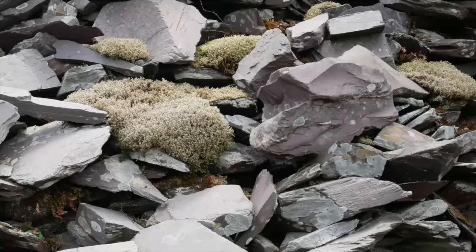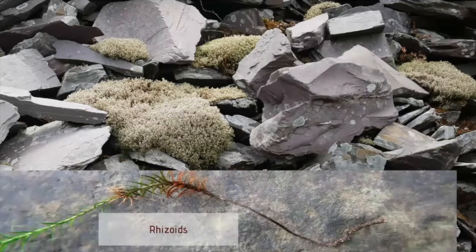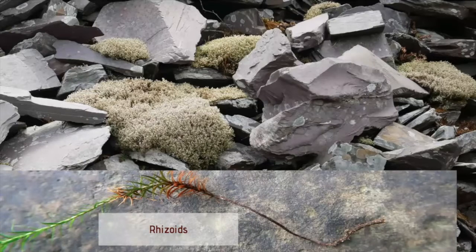Mosses evolved long before the development of a vascular transport system and therefore can't transport water to the leaves from the roots. But they do possess simple root-like rhizoids that function to anchor the plant to the substrate. As they have no transport system, they're able to absorb water from their entire surface and as such generally prefer damp and humid environments.